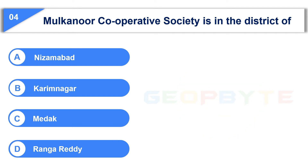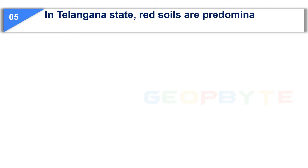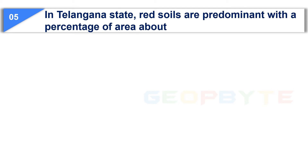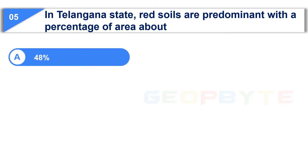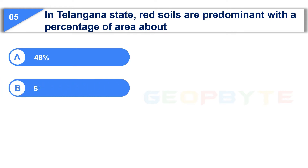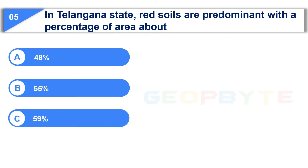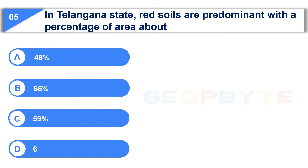Your time is up and the correct answer is Option B: Karimnagar. The fifth question is: In Telangana state, red soils are predominant with a percentage of area about — Option A: 48%, Option B: 55%, Option C: 59%, Option D: 62%. Your time starts now.